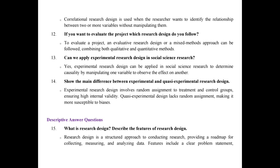Question 13: Can we apply experimental research design in social science research? Yes, experimental research design can be applied in social science research to determine causality by manipulating one variable to observe the effect on another. Question 14: Show the main difference between experimental and quasi-experimental research design. Experimental research design involves random assignment to treatment and control groups, ensuring high internal validity. Quasi-experimental design lacks random assignment, making it more susceptible to biases.